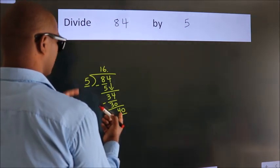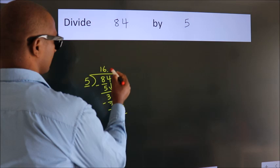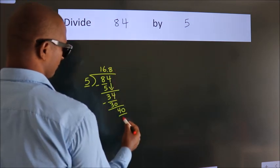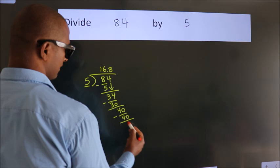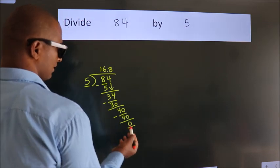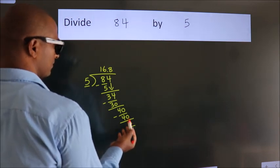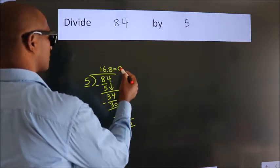When do we get 40 in 5 table? 5, 8, 40. We subtract. We get 0. We got remainder 0. So this is our quotient.